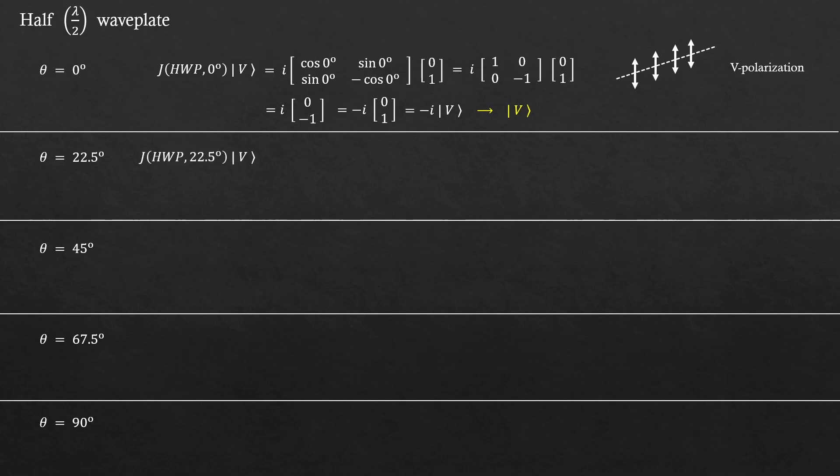For the next one, 22.5 degrees. But you remember we had two thetas in the sines and cosines. So it becomes 45 degrees. You'll get antidiagonal state, which is correct.